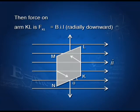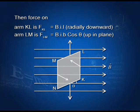The force on arm KL is F_KL equals BIL. According to Fleming's left-hand rule, this force will be radially downward as shown in the diagram. The force on arm LM is F_LM equals BIb cosθ. Once again, according to Fleming's left-hand rule, the magnetic force will be upward in the plane of the paper.